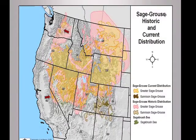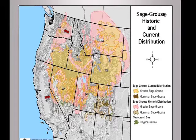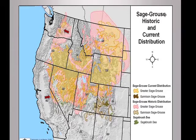All of you are familiar with sage-grouse, so we will only quickly review the basics of the species, the threats, and the current planning landscape. Greater sage-grouse occur across most of the West. Gunnison sage-grouse, a separate species described in 2000, occurs in southwest Colorado and southeastern Utah.